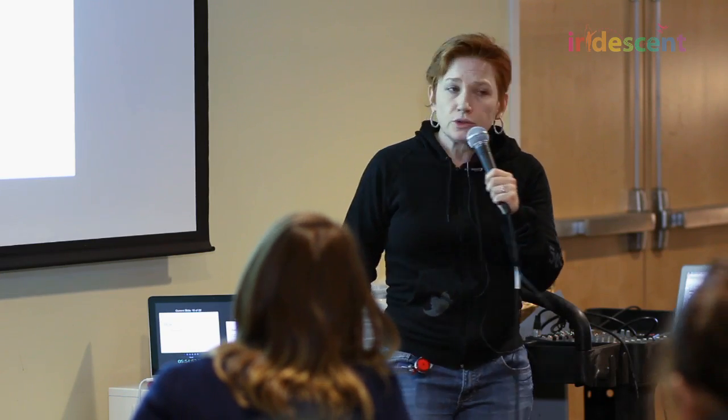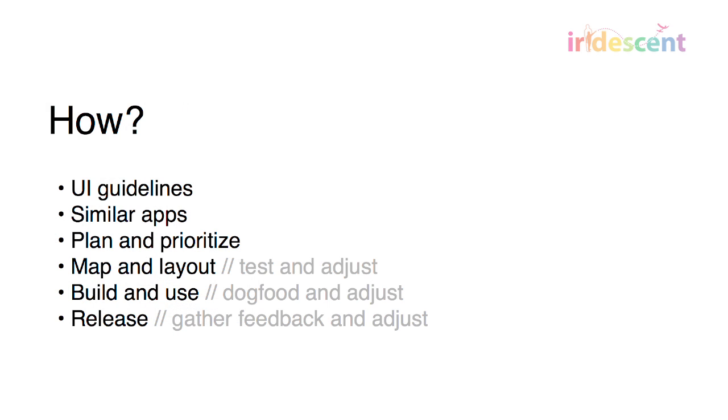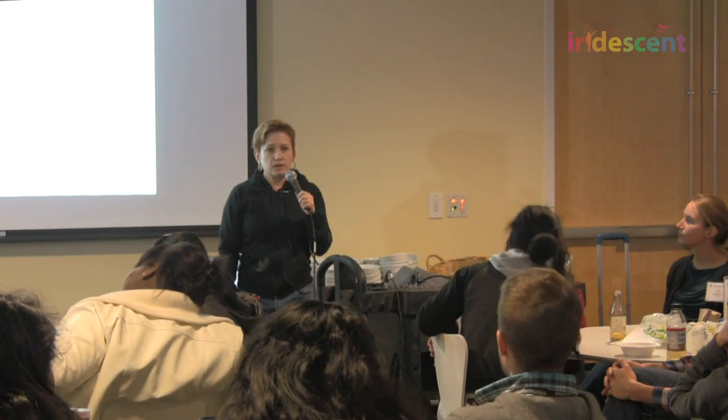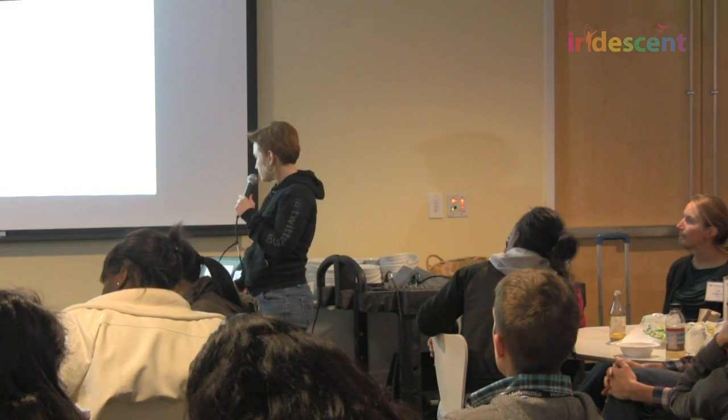So how do you do all this? Look to UI guidelines — every smartphone maker, Apple and Android, have UI guidelines specifying the best practices. Those are available online, so download them and read through them. Look at similar apps to see how others have done it, and learn from that — including what they've done wrong or what you'd improve. Plan and prioritize: think it all the way through and draw it out. Map and lay out the flow, then test it with a paper prototype and adjust as necessary. Build it and use it — we call that dogfooding, and we do it at Twitter all the time. Employees use features before they go out in the wild, which gives a much better understanding of what's working.